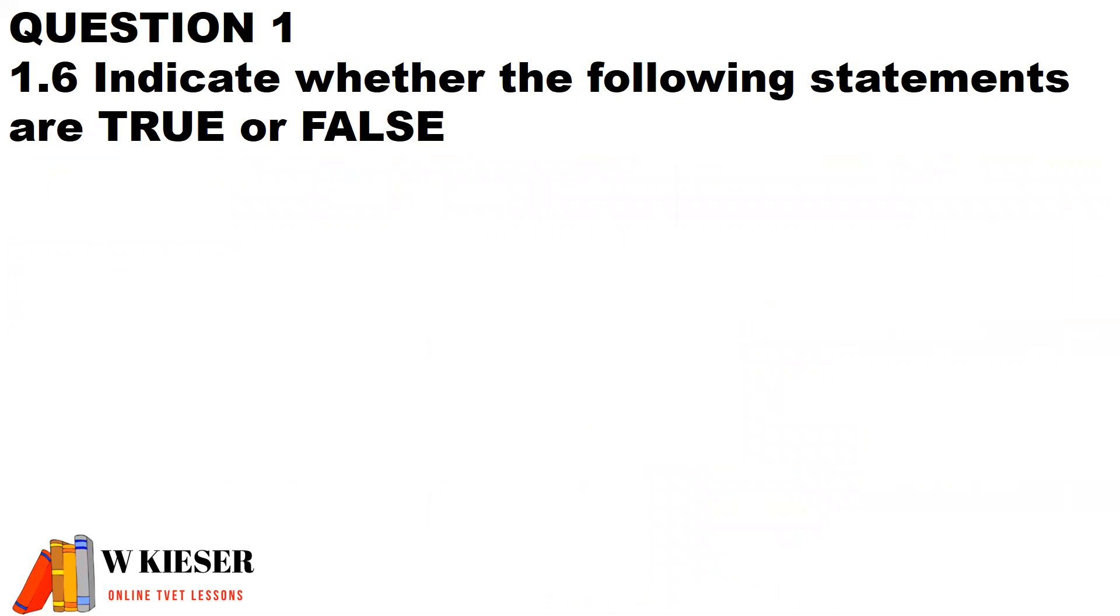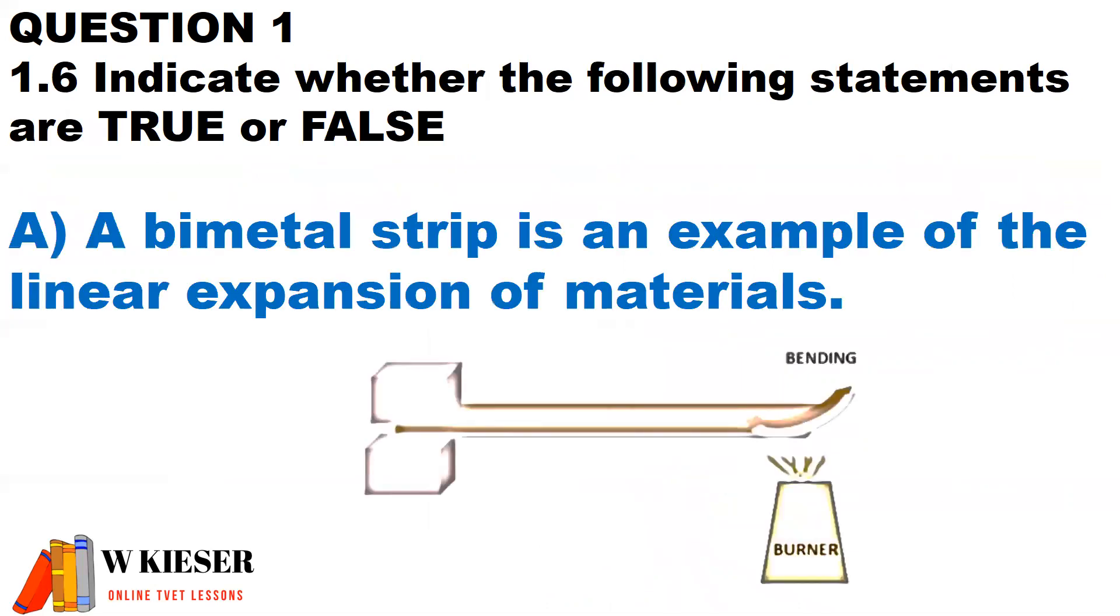In question 1.6, we need to indicate which of the following statements are true or false. In part A, a biometal strip is an example of the linear expansion of materials, and the answer is true.